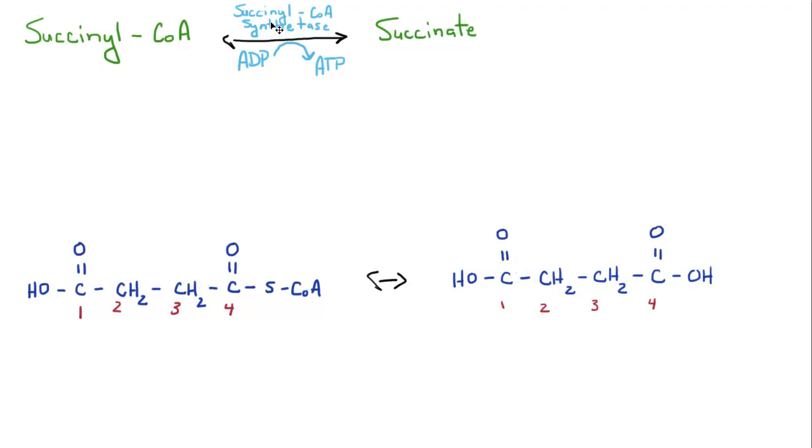The molecule that does this is called succinyl coenzyme synthetase. So you've got your succinyl coenzyme A to succinate. Really, all it's going to do is kick off this coenzyme A and form the carboxylic acid here.